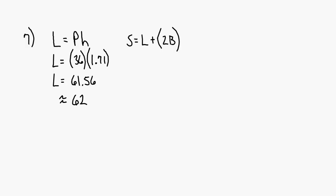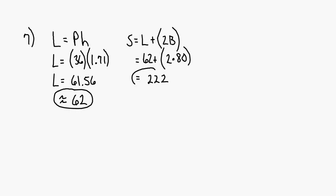Surface area equals lateral area plus 2 times the area of the base. The area of the base is 10 times 8 — it's a rectangle, so length times width is 80. So surface area equals 62 plus 2 times 80, which is 62 plus 160, giving you 222. So the lateral area is 62 and the surface area is 222.